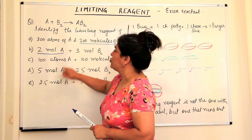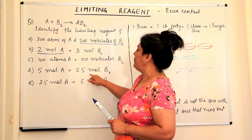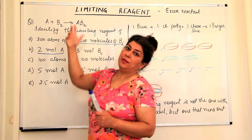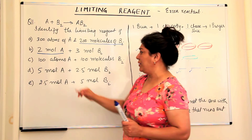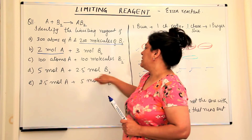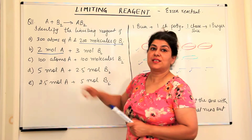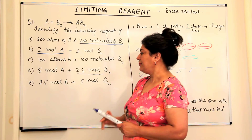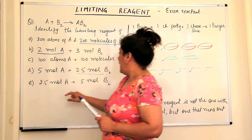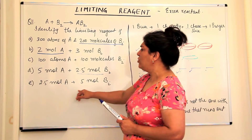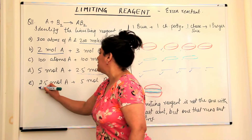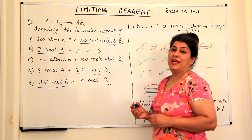Fourth case: you have 5 moles of A but only 2.5 moles of B₂. Since the ratio is 1:1, B₂ is half of what is required. You need 5 moles of B₂, so B₂ would run out first and would be the limiting reagent. Fifth case: you have 2.5 moles of A and 5 moles of B₂. You only need 2.5 moles of B₂, so you do not need 5 moles. Therefore, the limiting reagent here would be the 2.5 moles of A.